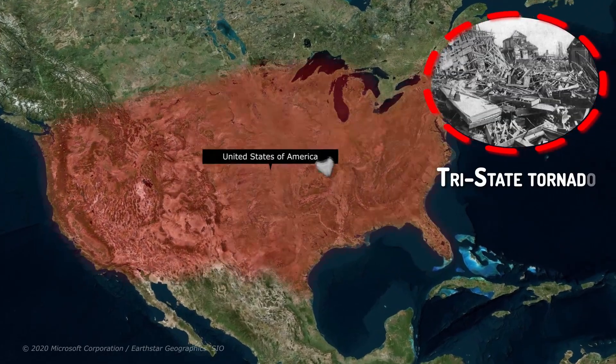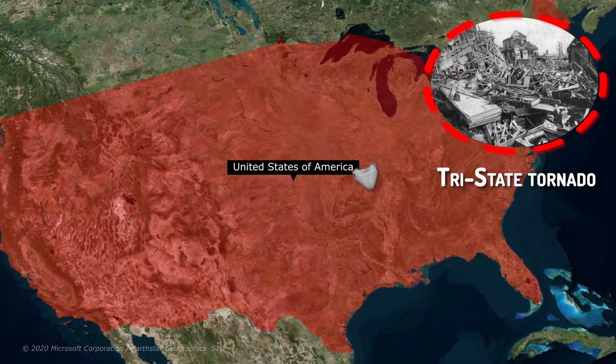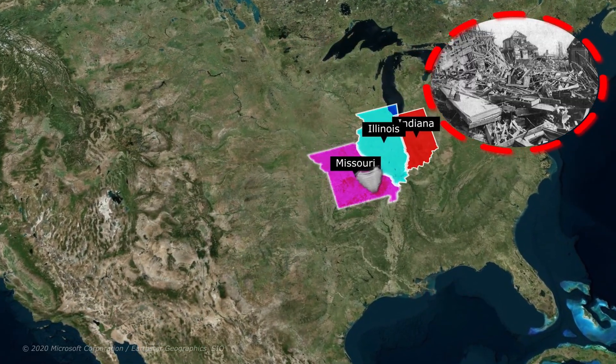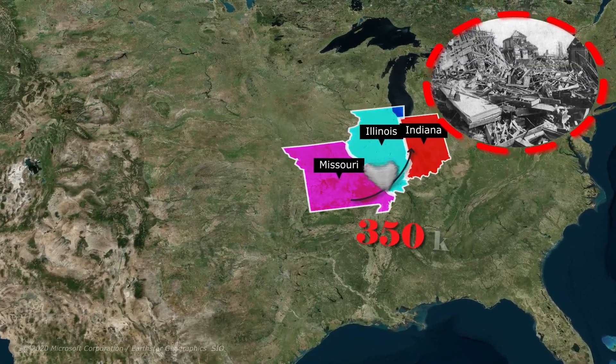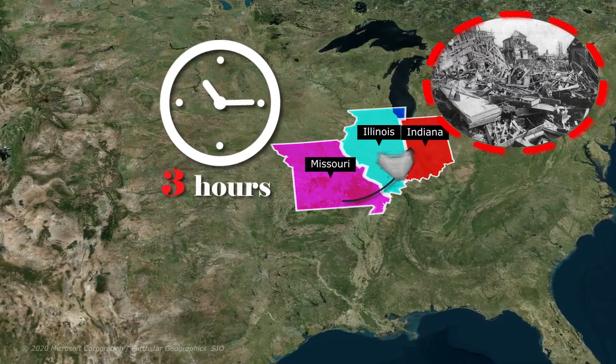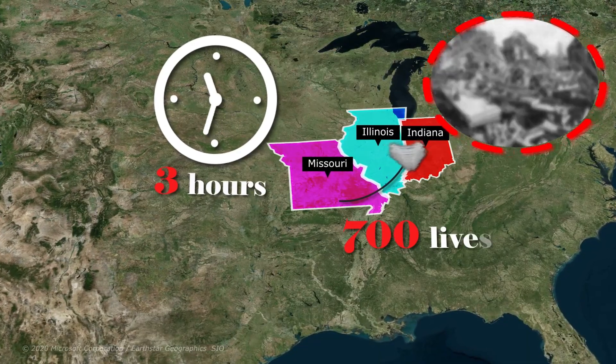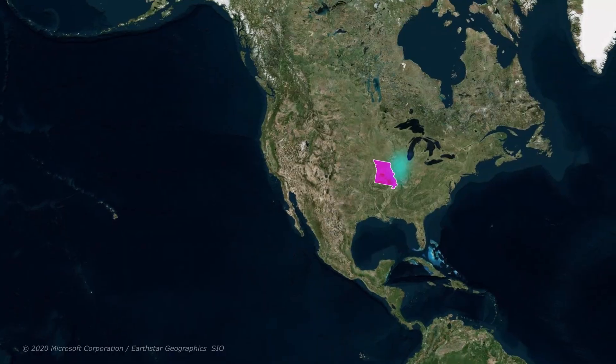The most destructive F5 tornado ever recorded was the Tri-State tornado in the United States in 1925. It tore through the states of Indiana, Illinois, and Missouri on a 350-kilometer trail of absolute carnage. It lasted for more than three hours, and it claimed nearly 700 lives. To date, it's the third most costly tornado in history.